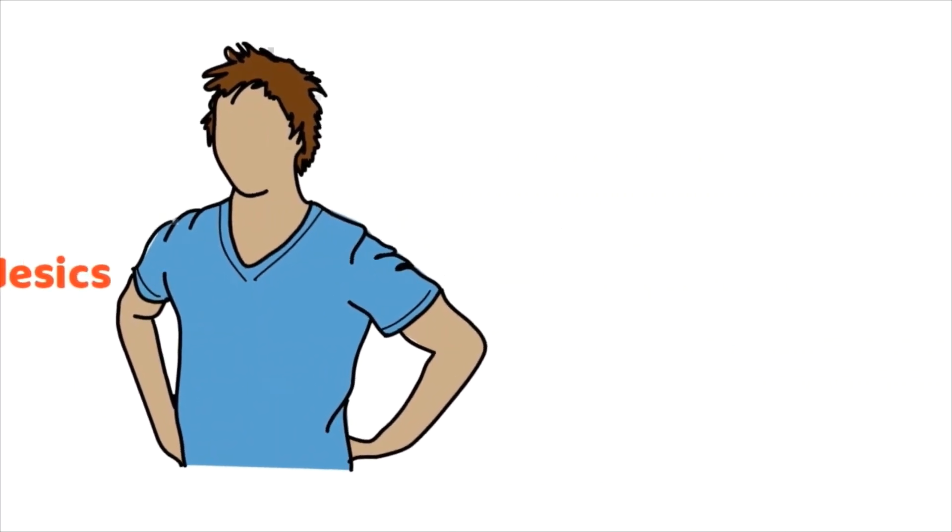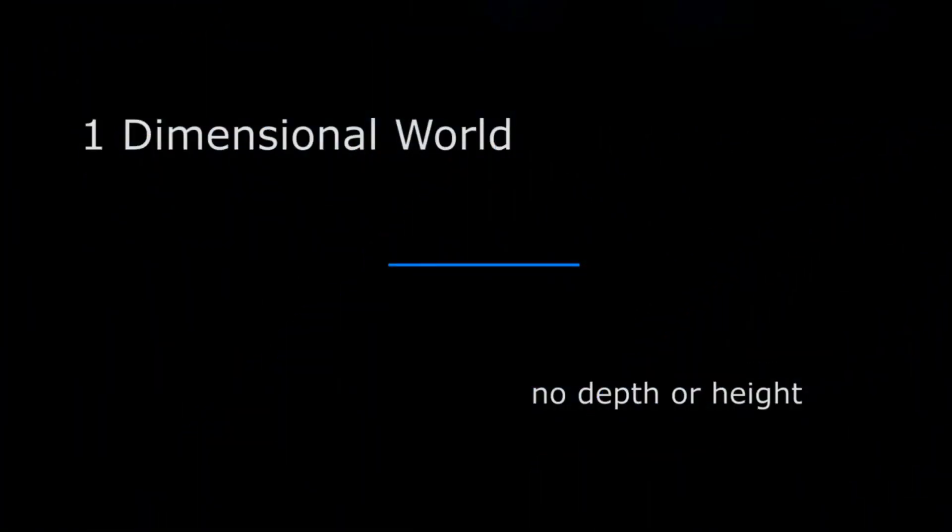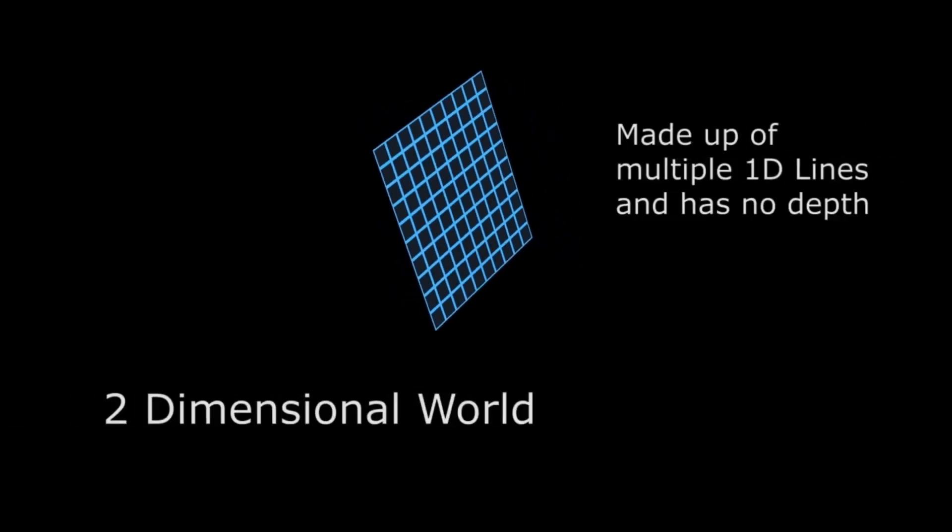This is very much similar to the shortest path between any two points on Earth, which is not a straight line but an arc of a great circle. By the way, space-time is a mathematical model that combines the three dimensions of space and the one dimension of time into a single four-dimensional manifold.